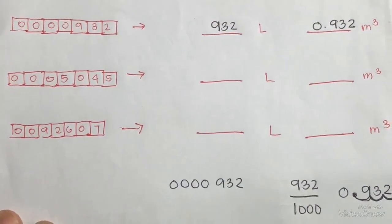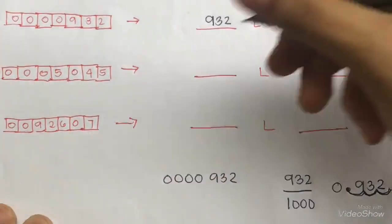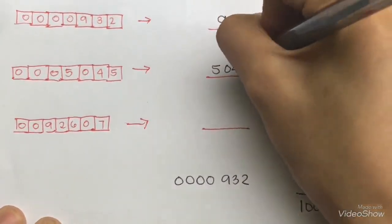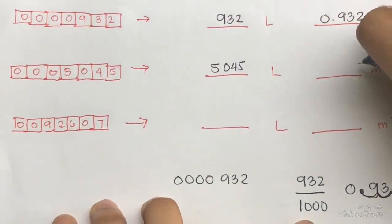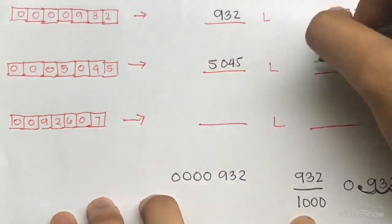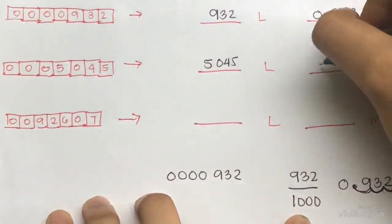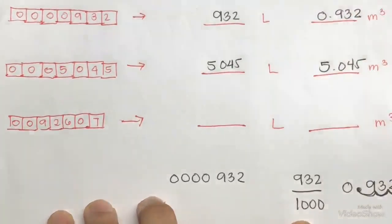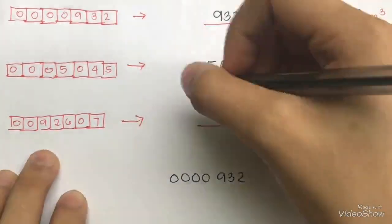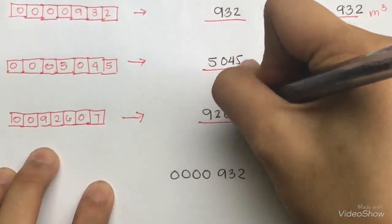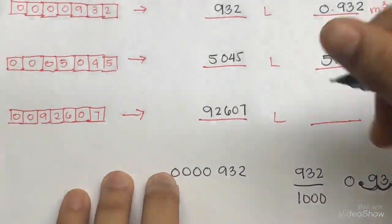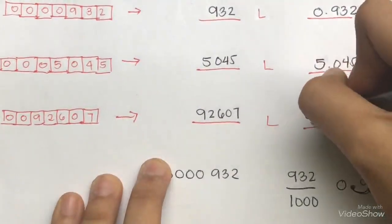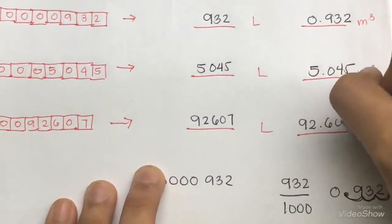The same process applies to numbers 2 and 3. For number 2, the liters is 5,045, and moving the decimal three places to the left gives 5.045 cubic meters. For number 3, the value is 92,607 liters, and moving the decimal three places to the left gives 92.607 cubic meters.